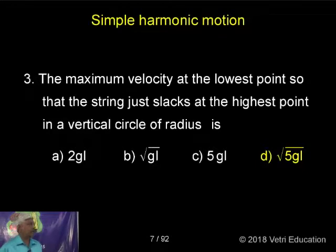The maximum velocity at the lowest point so that the string just slacks at the highest point in a vertical circle of radius is root of 5gl.